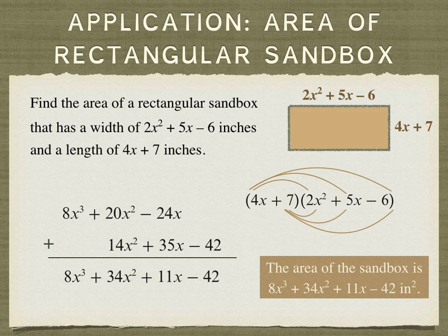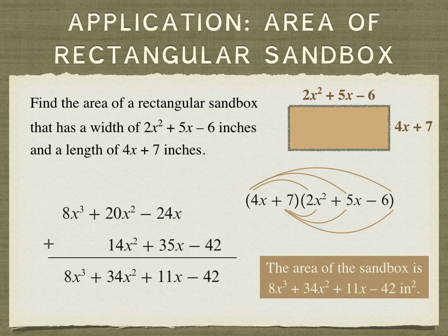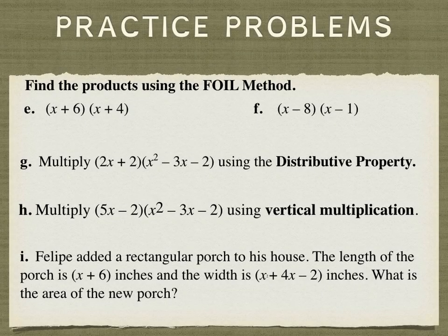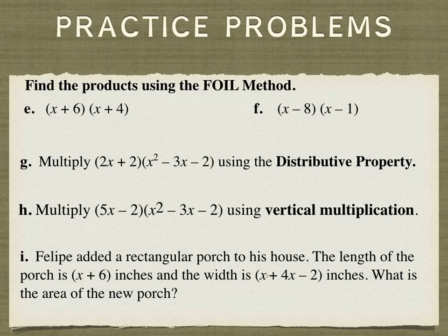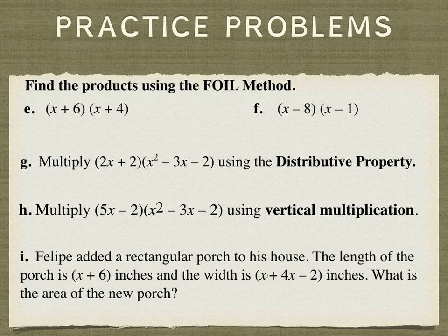So we reviewed three strategies. We talked about the distributive property, the double distributive. We mentioned the FOIL strategy for multiplying two binomials. And we mentioned vertical multiplication. And here are some practice problems for you to try. So put the video on pause and give them a try. And then when you press play again, your answers will appear so you can check your work.